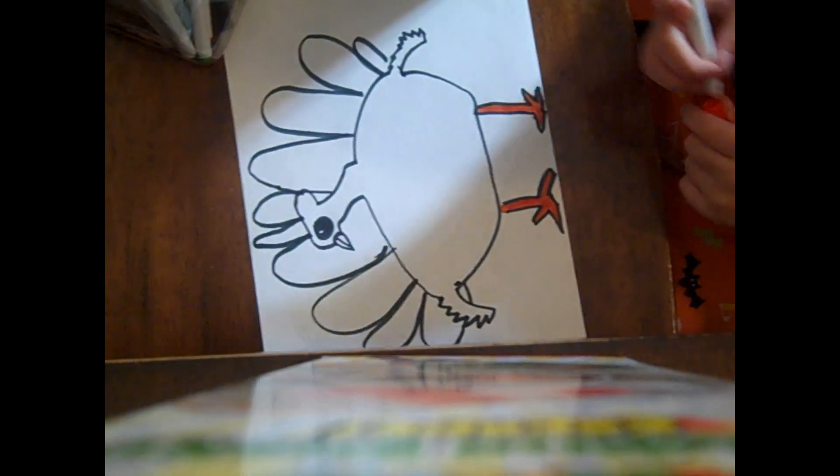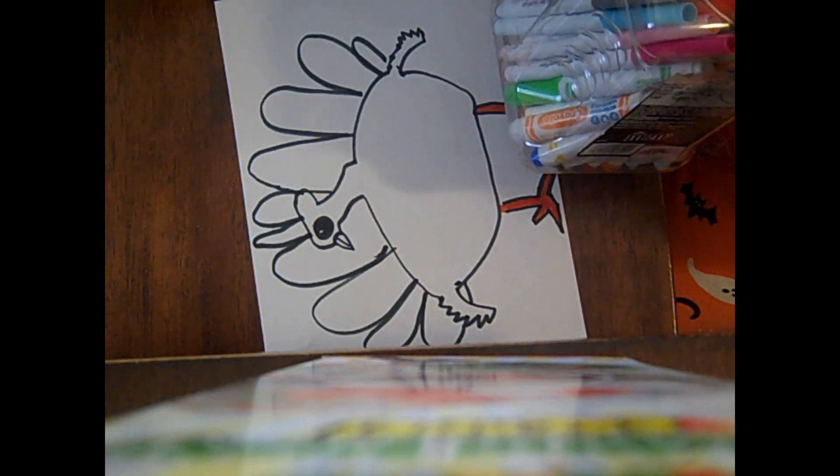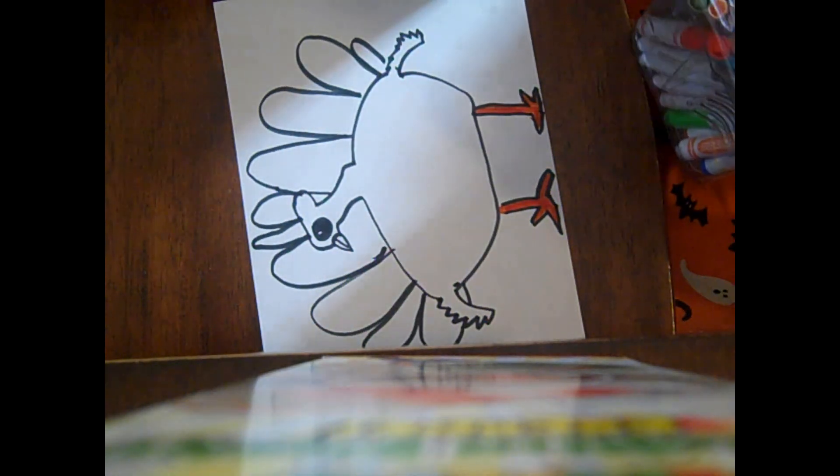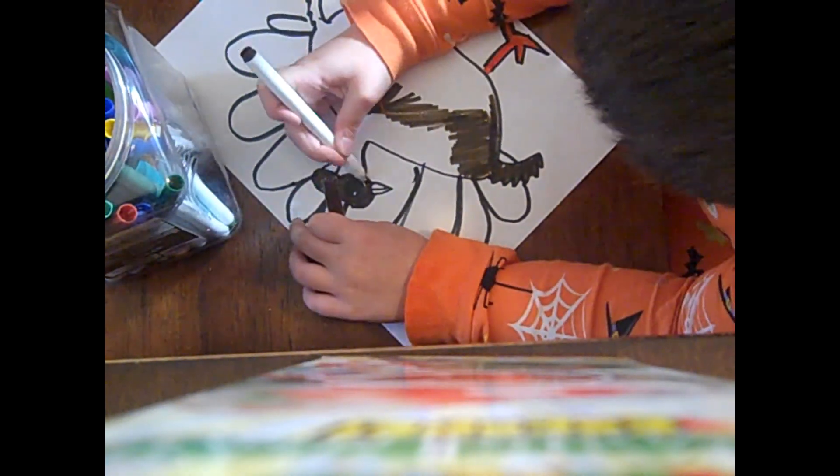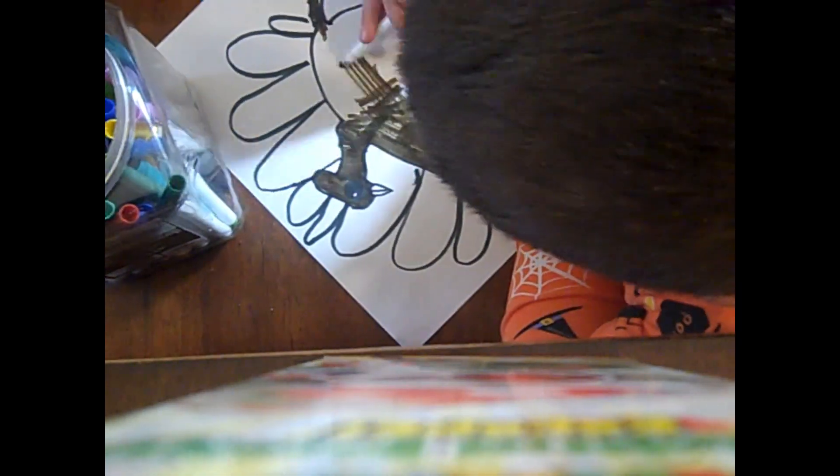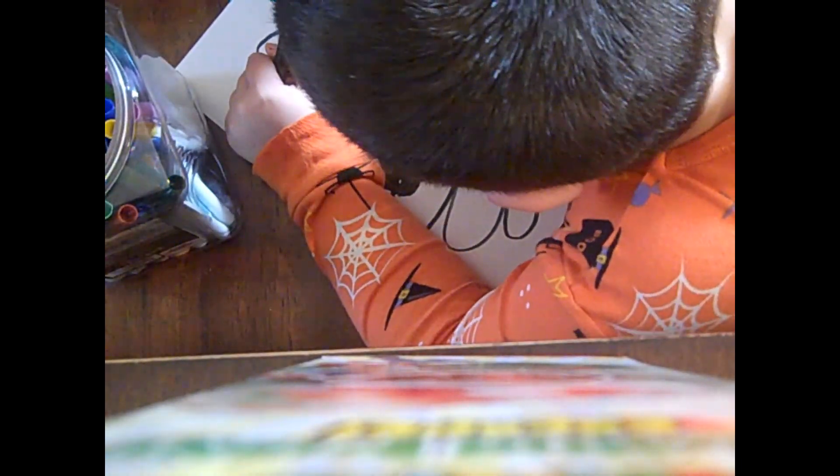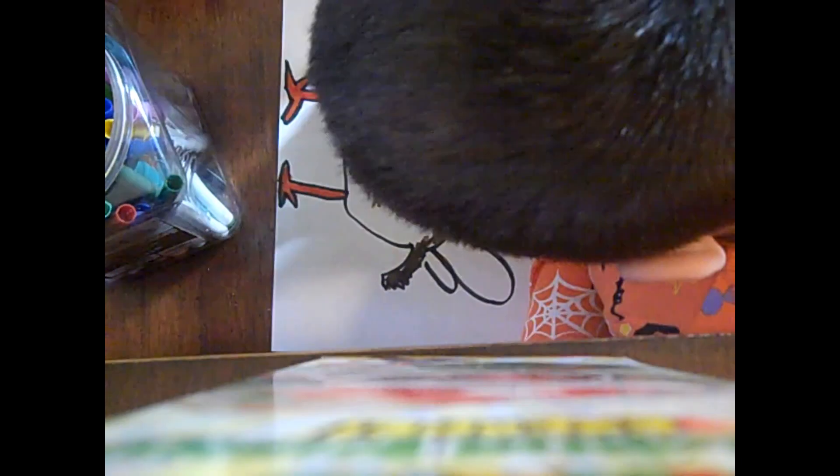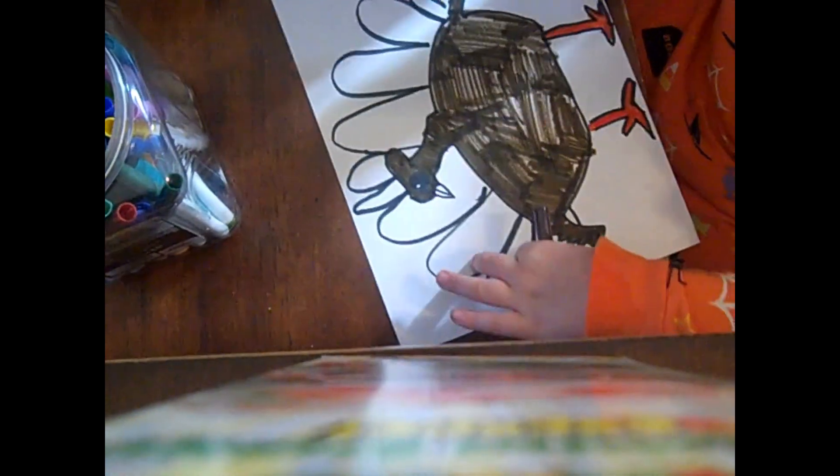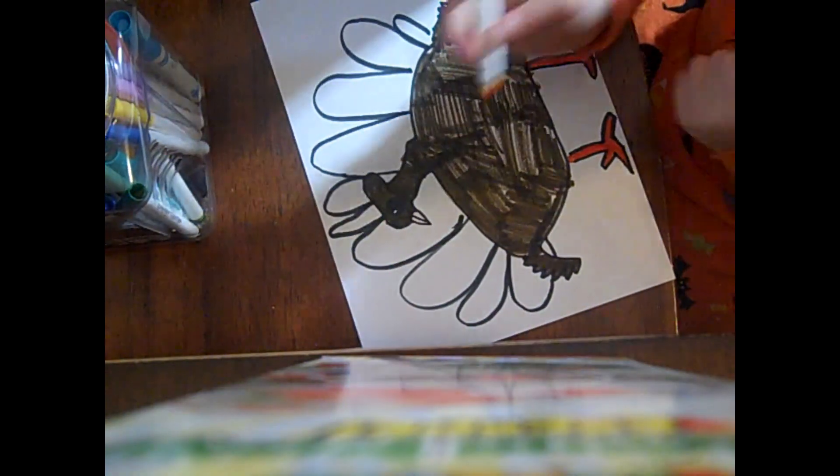Then switch over to your brown. I'm gonna fast forward this part where I color the turkey's body. And then let's switch over to a dark yellow and color in the beak.